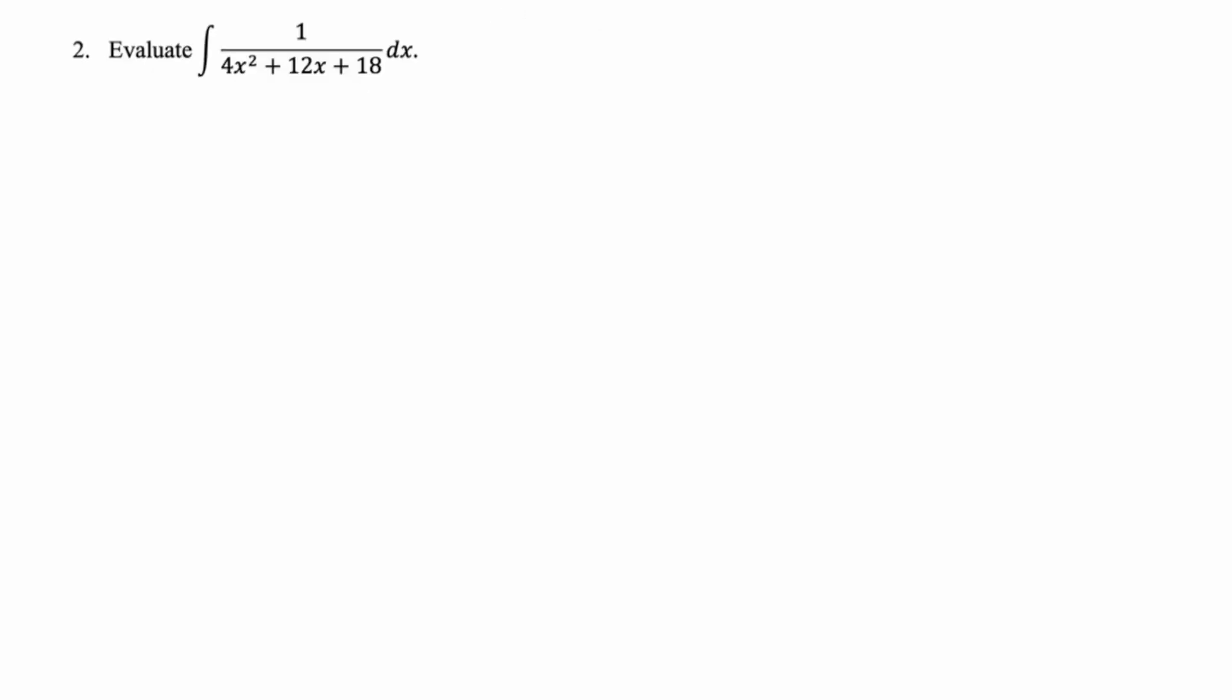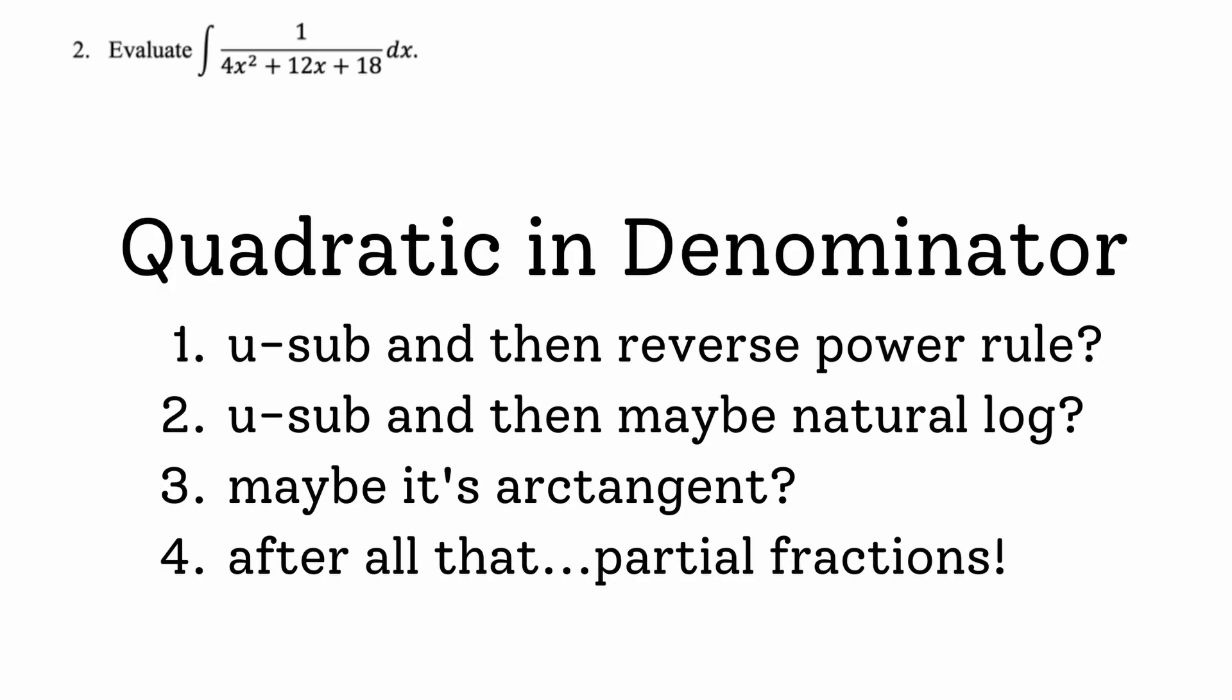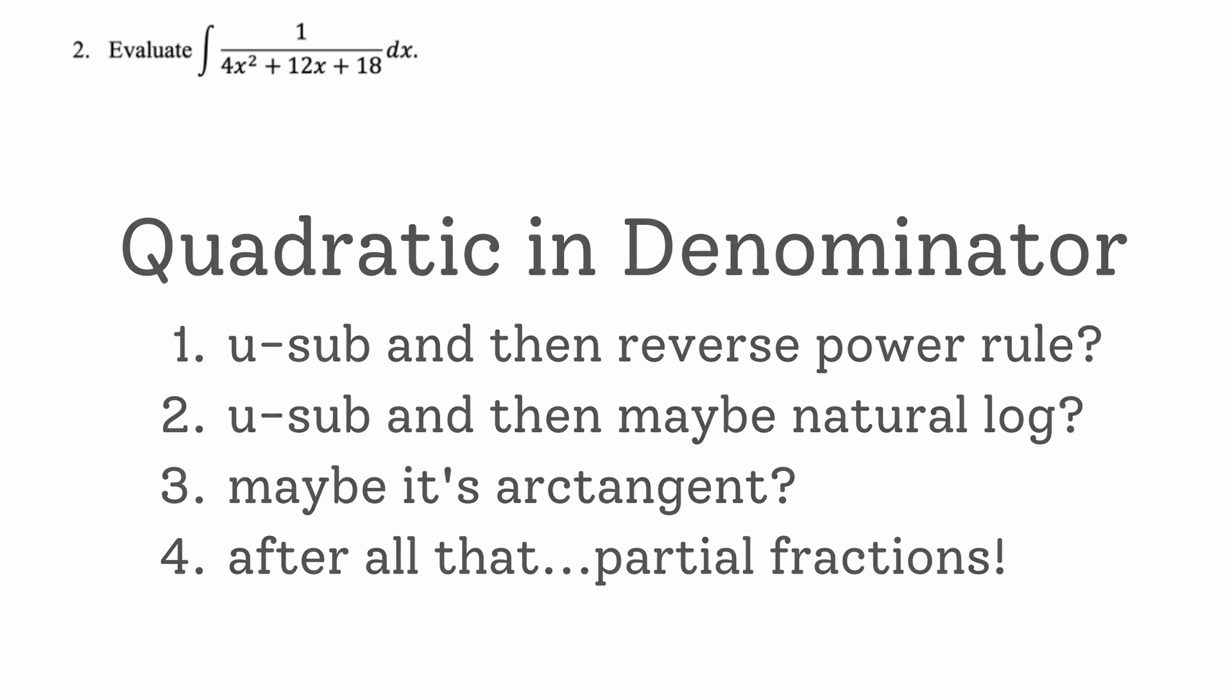So we have to evaluate the integral 1 over 4x squared plus 12x plus 18 dx. So my first thought on these always is complete the square. Even on Calc BC, you kind of have like an equal chance of it being complete the square to get an arctan type thing or factor to get partial fractions. I always think it's going to be arctan because in AB, you never get partial fractions.